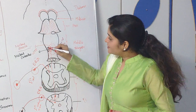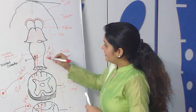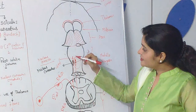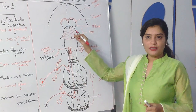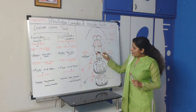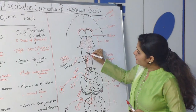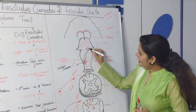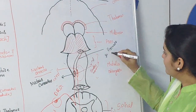After that, this tract synapses and the new fibers formed are called internal arcuate fibers — fibers which originate from the nuclei of the medulla oblongata. These internal arcuate fibers are sensory fibers. They decussate to the opposite side of the medulla oblongata and travel up to the level of the pons.